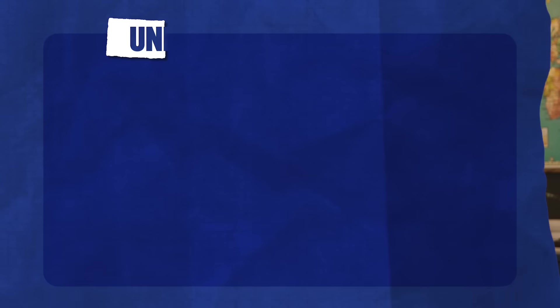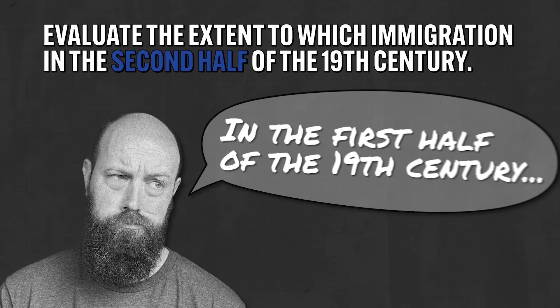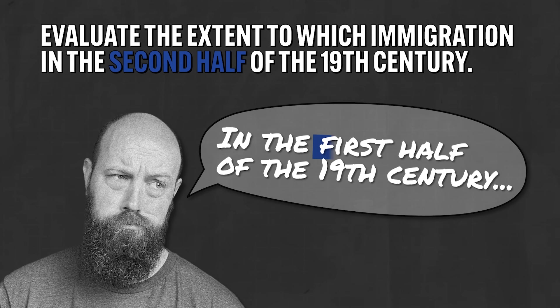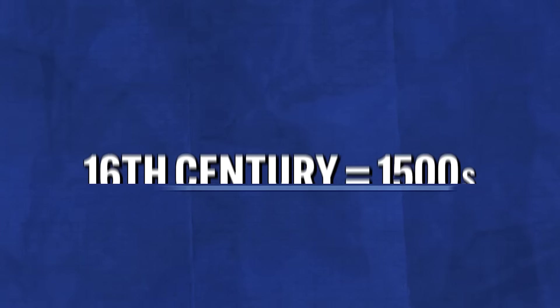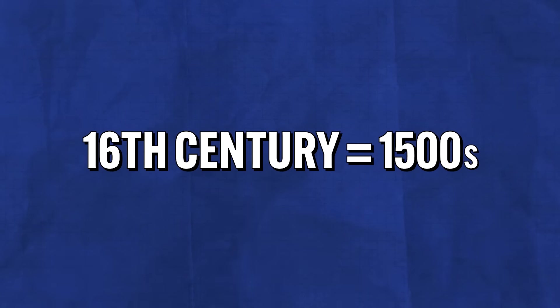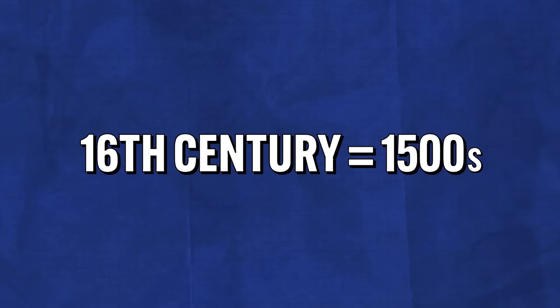The first thing you need to do is make a note of what time period they're asking you to write about. If they ask you about immigration in the second half of the 19th century, and you write about immigration in the first half of the 19th century, you're done. And if the prompt gives you centuries, write out the actual year numbers. For example, if they want you to write about the 16th century, write out 1500s. When you're under pressure, you are dumber than you think, so make sure you get the dates correct.